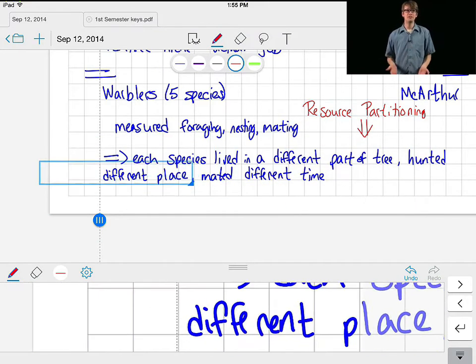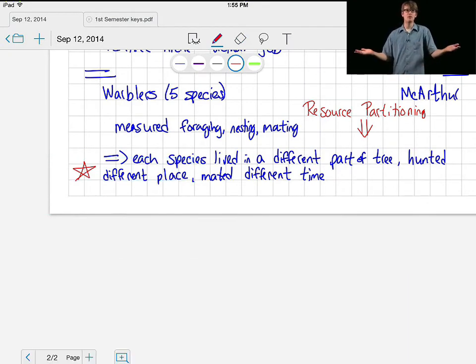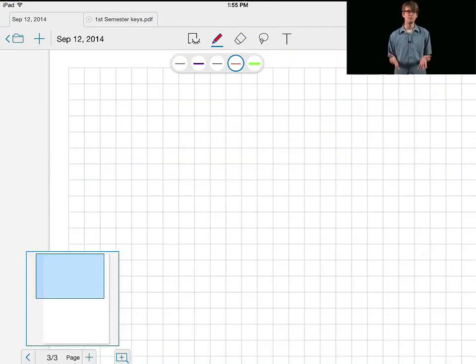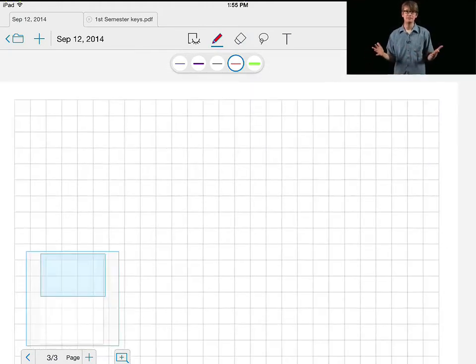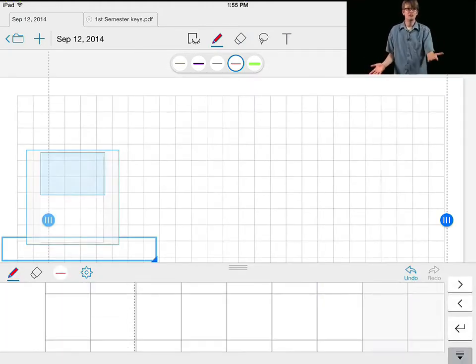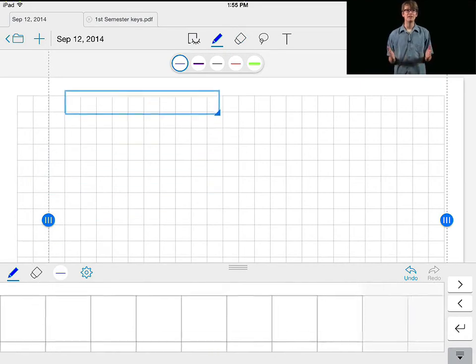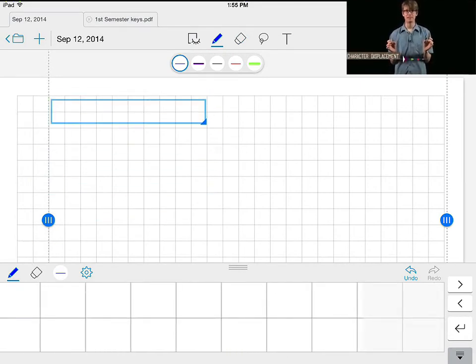So, if organisms can do this, if they can behave in ways that help minimize competition while increasing their odds for survival, it follows that traits associated with this behavior would start being selected favorably. After all, that's what natural selection is for. When this happens, it's known as character displacement.